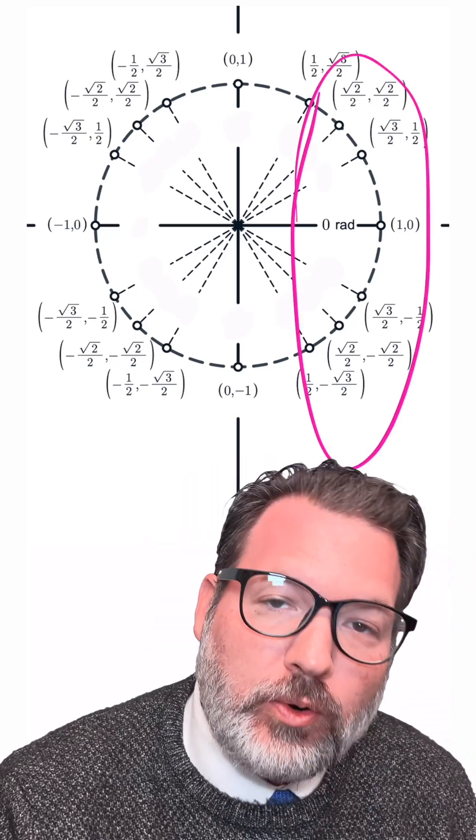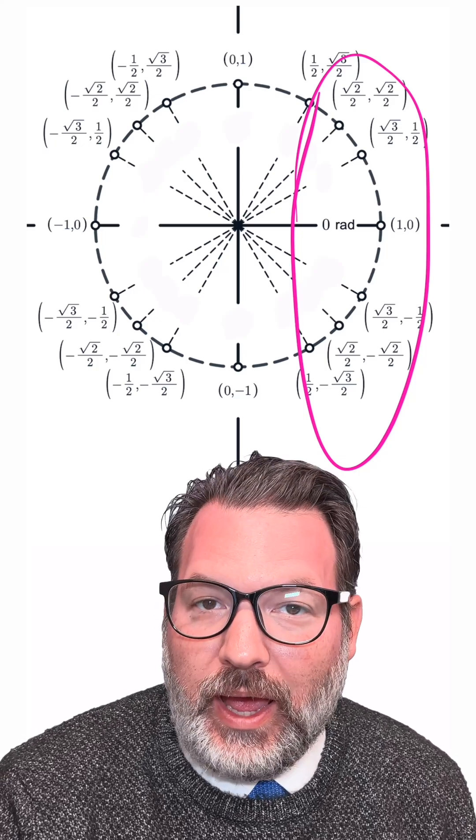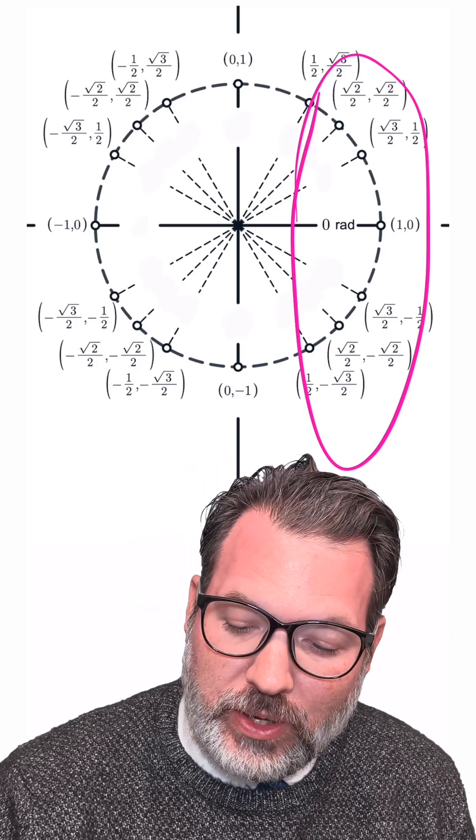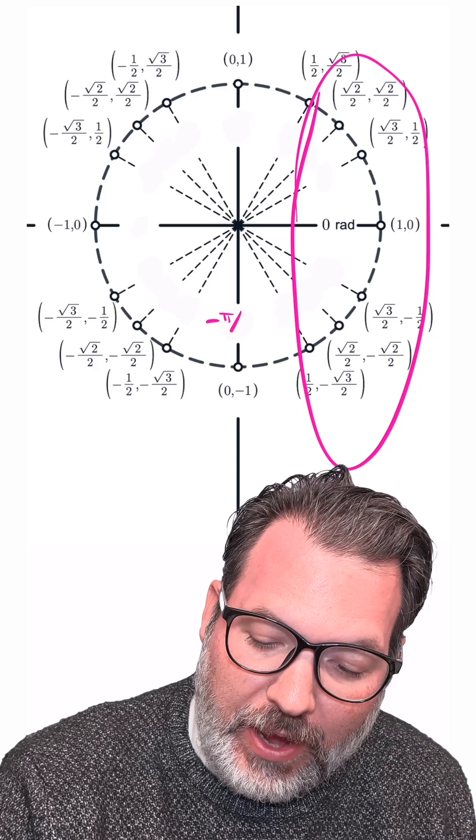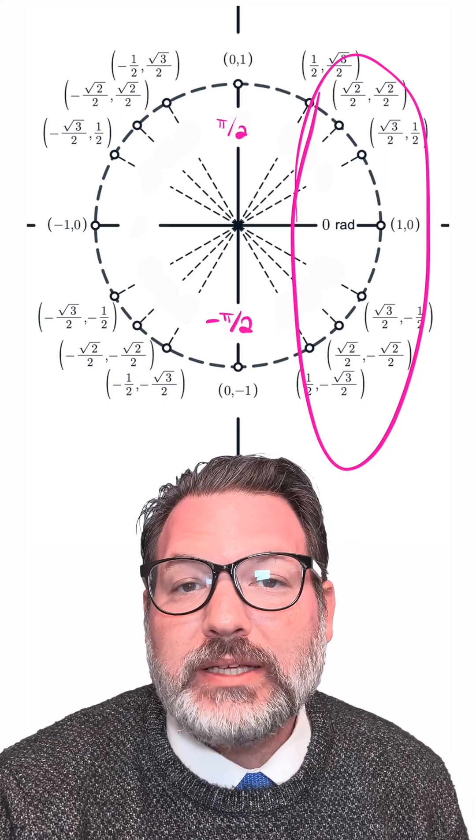The way that we do that with the y-coordinates is we use quadrants 1 and 4. And to make things nice, we count that from negative pi over 2 all the way up to positive pi over 2.